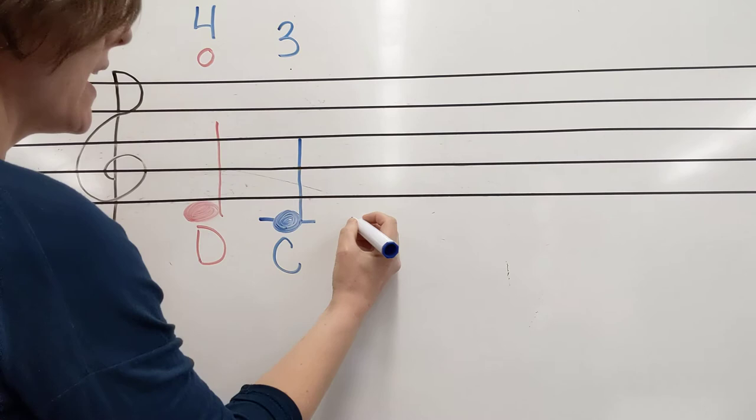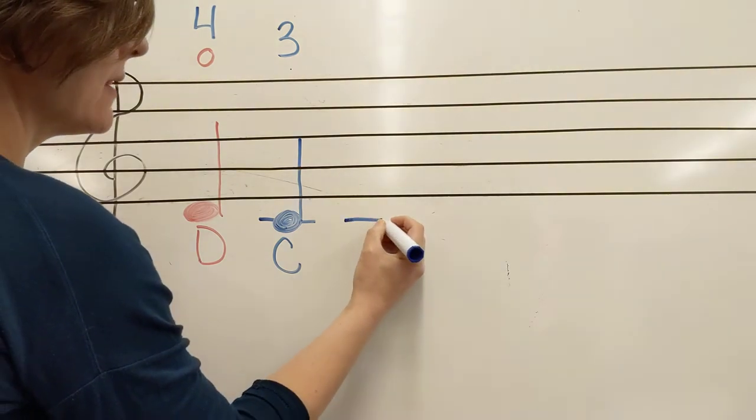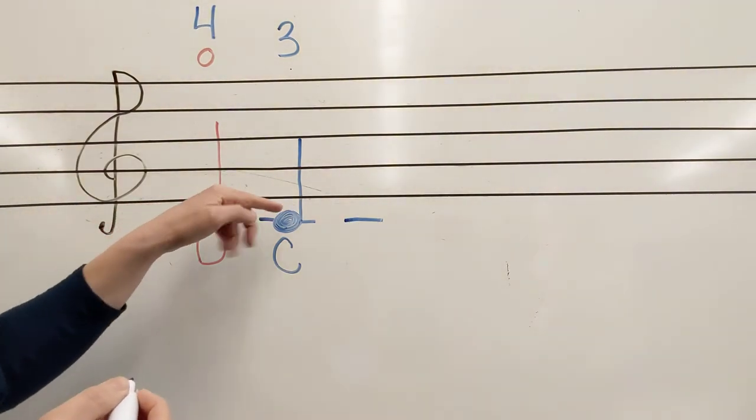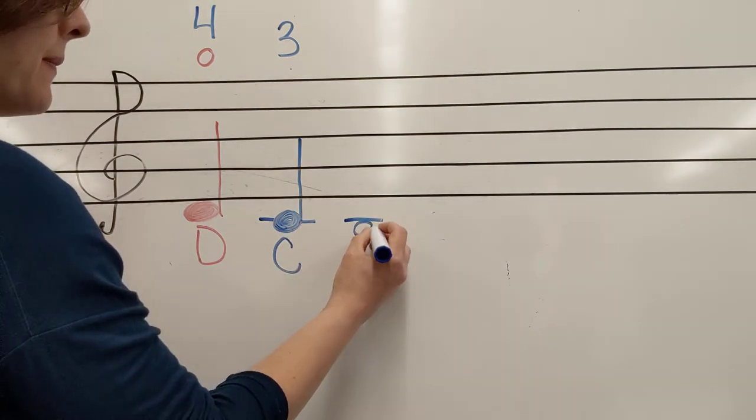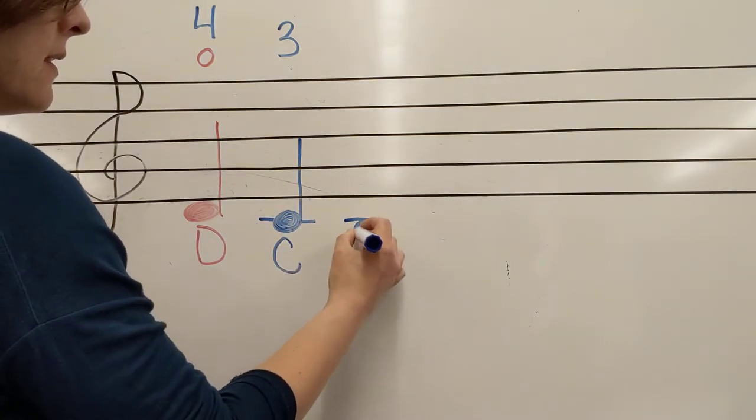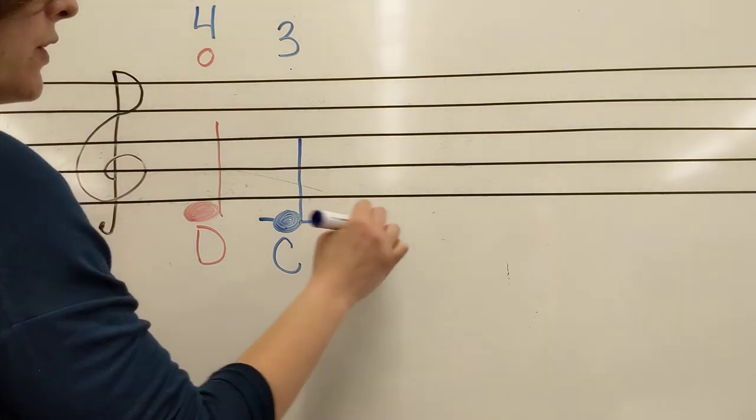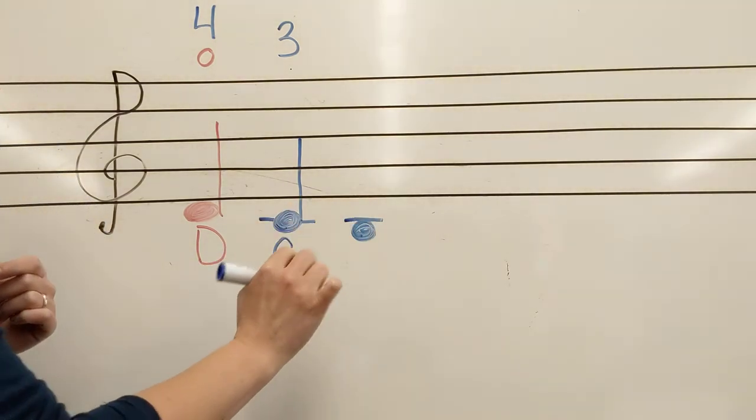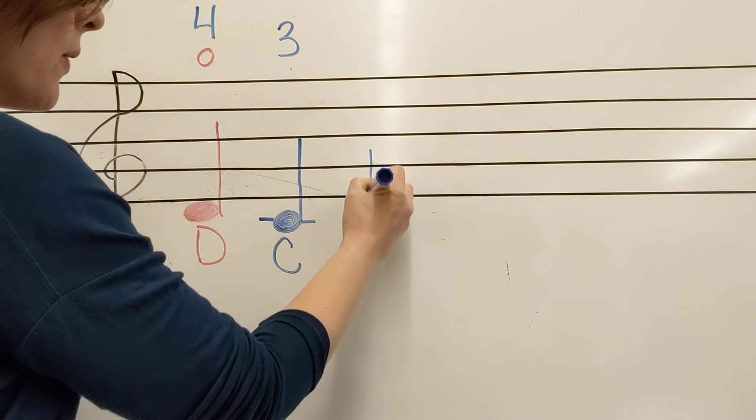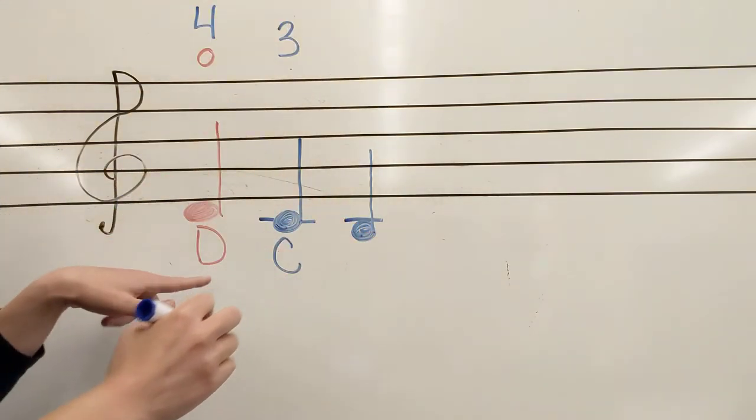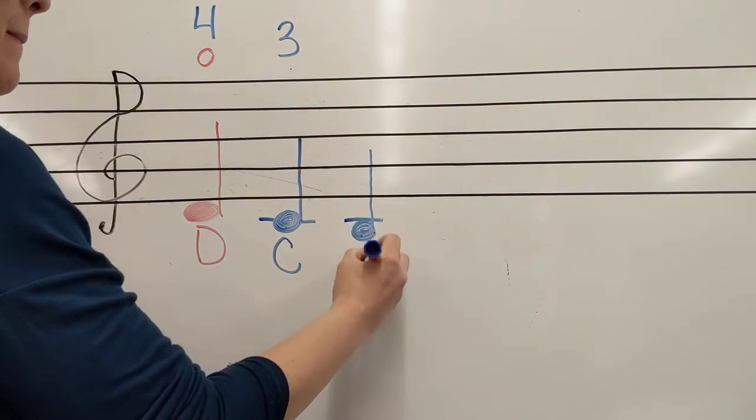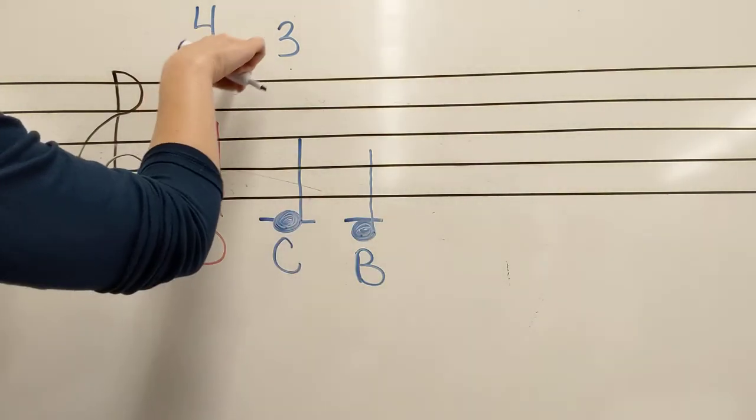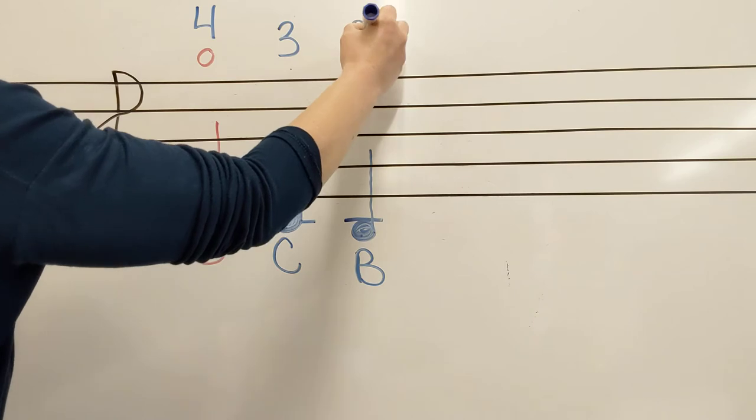As we go down, we're going to draw that same line again, as close to that spot as possible. Okay, so it's exactly the same as the line the C is on, but this time our note is going below it. So the head of the note, it looks like it's almost wearing that ledger line for a hat. Stem is still going up and on the right, going backwards in our alphabet, D, C, B. Four, three, two.